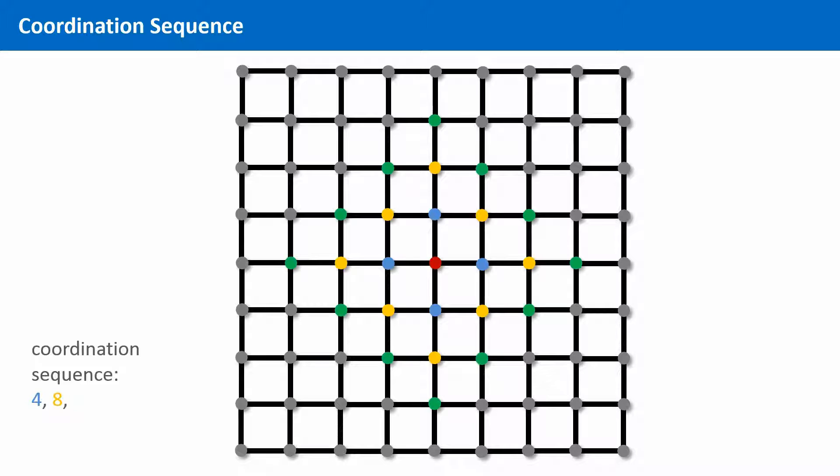And we go another step further. How many nodes are there that are exactly three edges away from the origin? Yes, twelve nodes. They are marked in green. And how many nodes are exactly four edges away? Sixteen, all marked in orange. So we write down the coordination sequence as a counting of the first, second, third, and fourth degree neighbors. Four, eight, twelve, sixteen, and so forth.